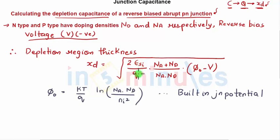What is this phi_0? This is the built-in junction potential. This is acceptor doping density NA, this is donor doping density ND. Phi_0, the built-in junction potential, is kT/Q × ln(NA × ND / Ni^2). We already know this. So with this, we have got the depletion region thickness, and we are interested in finding the charge.